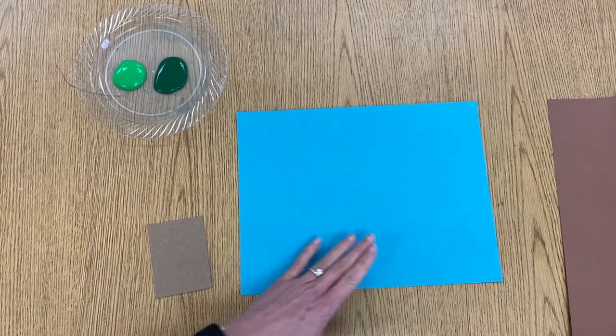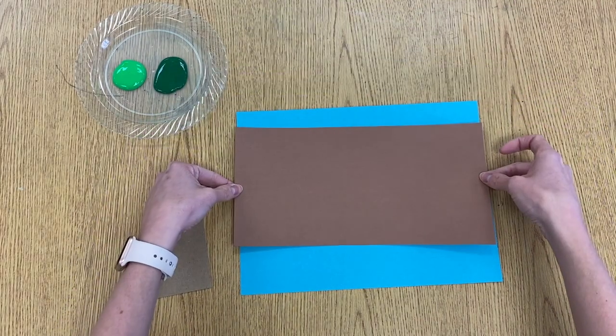You're going to start with a blue background and a brown rectangle paper.